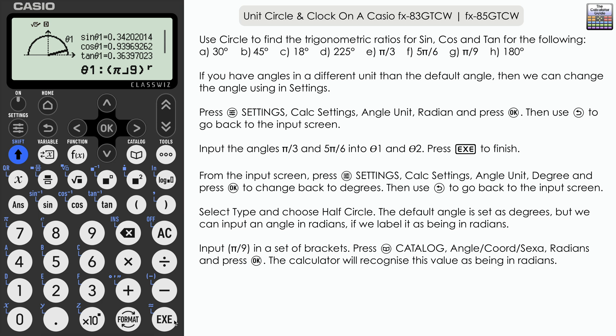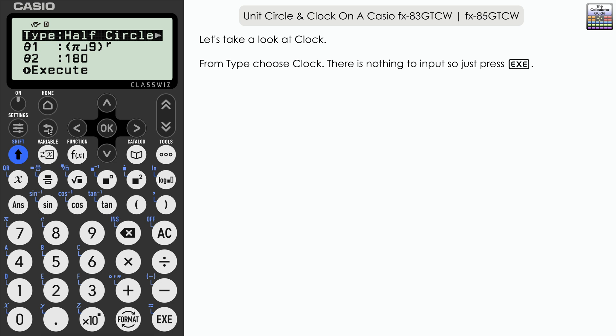Here we can see pi over nine radians displayed and we've got the decimal approximations of all three trigonometric values there. Down to 180 degrees you can see that's a bit more simple: sine and tan of 180 are zero, cosine is negative one. So that's the half circle. I'm not sure whether there's any real benefit for that over the full unit circle other than just limiting your values to 180 degrees or less.